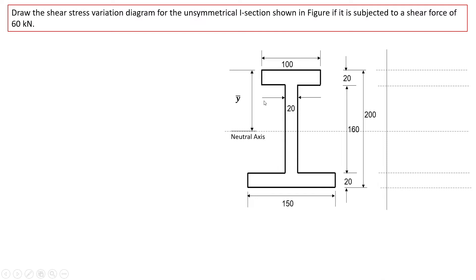We have an unsymmetrical I-section. The top flange width is 100 mm and the bottom flange width is 150 mm. The thickness of all three members — top flange, web, and bottom flange — is 20 mm. Since the widths of the top and bottom flanges differ, it is an unsymmetrical type of I-section.